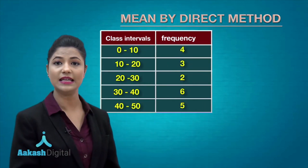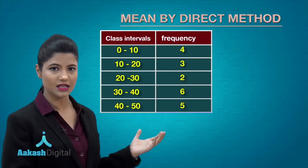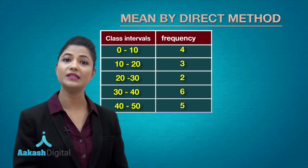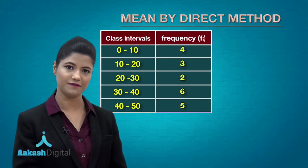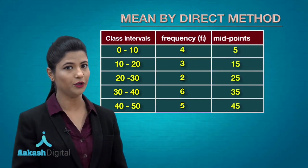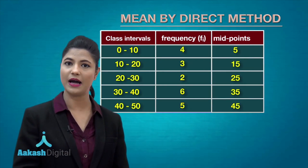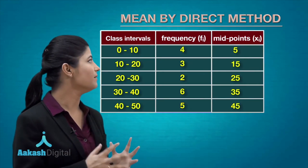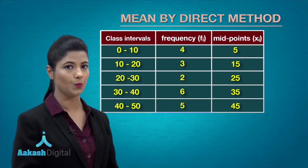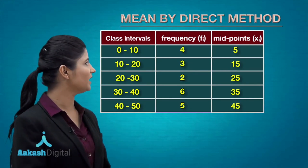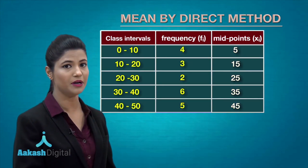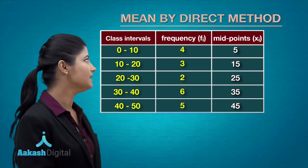You have this data set containing grouped data with class intervals and their respective frequencies, where frequencies are denoted by fᵢ representing the frequency of the ith class. You then obtain the midpoint of each class, denoted by xᵢ, where midpoint = (lower limit + upper limit) / 2. Calculating this gives midpoints of 5, 15, 25, 35, and 45 for these classes.